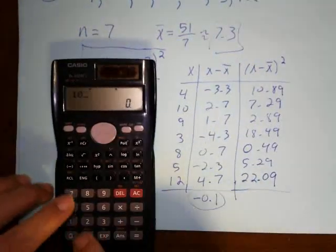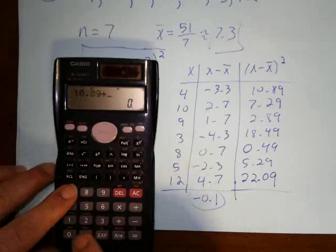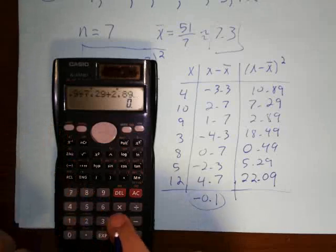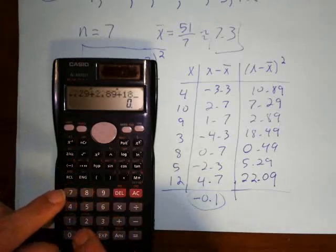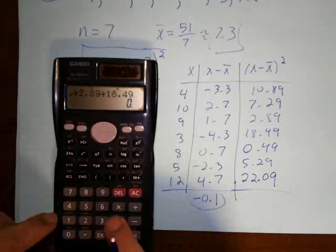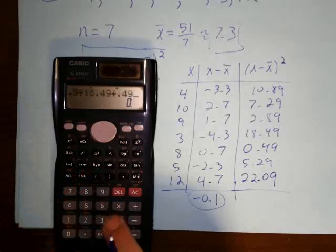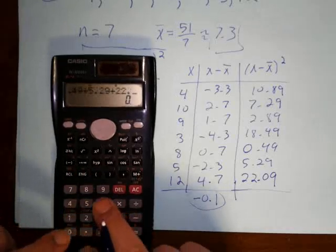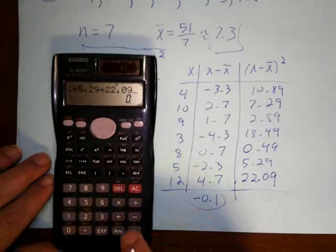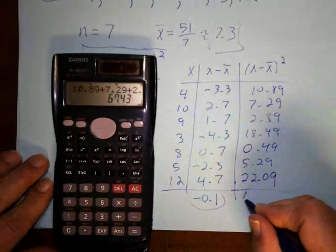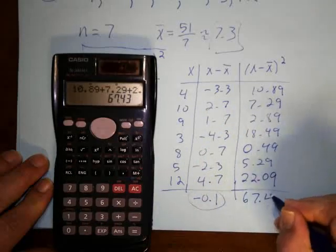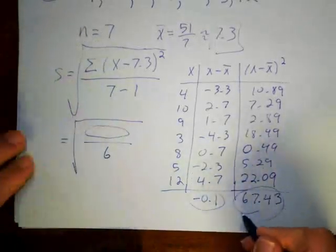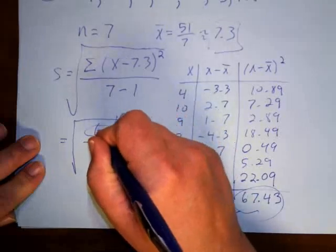So now I need to add those up: 10.89 plus 7.29 plus 2.89 plus 18.49 plus 0.49 plus 5.29 plus 22.09, and we get 67.43. And so this number here would go into this: 67.43.